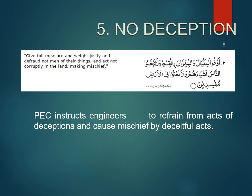Another important component of the code of ethics is no deception. The deception concept was also explained in previous lectures. Deception is when you are not showing a true picture of things to the people. This concept is also justified by taking an ayah from the Quran: 'Give full measure and weigh justly and defraud not men of their things and act not corruptly in the land making mischief.' This means that as an engineer you should work in a faithful and honest way.